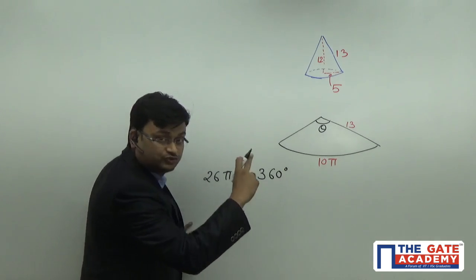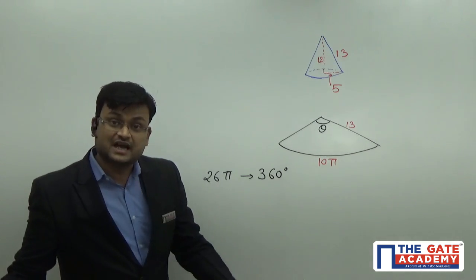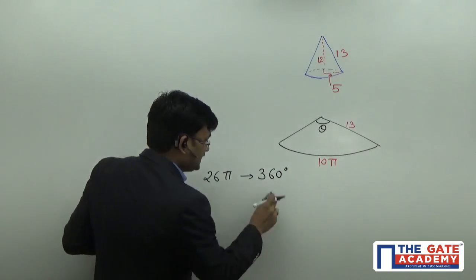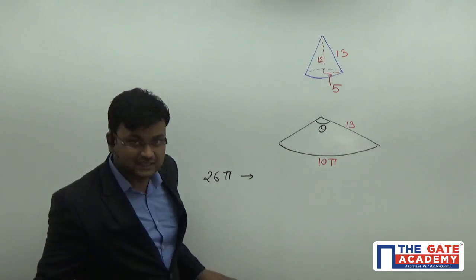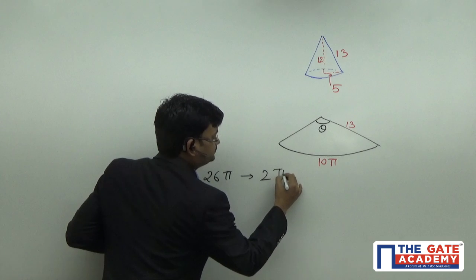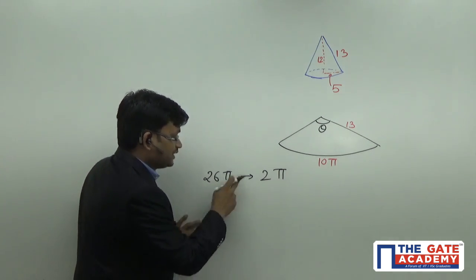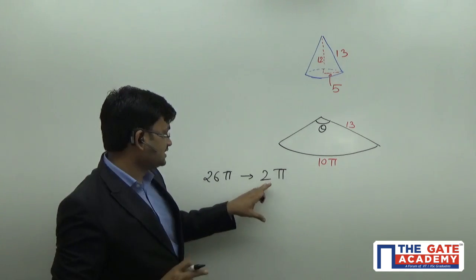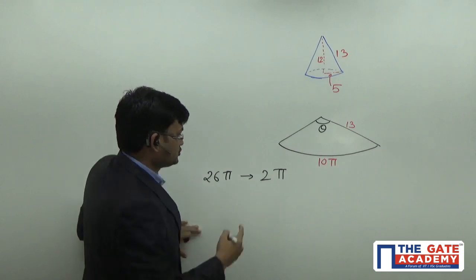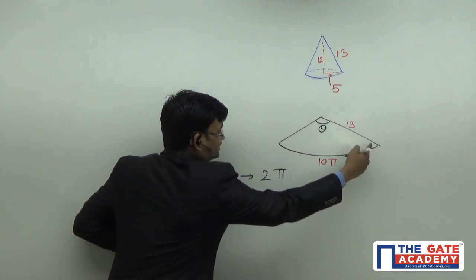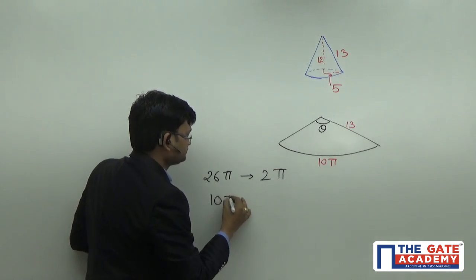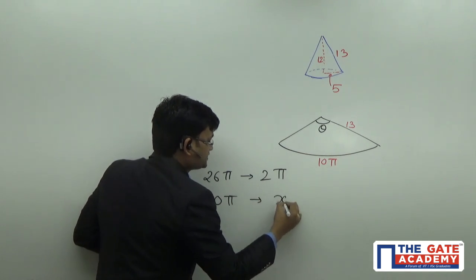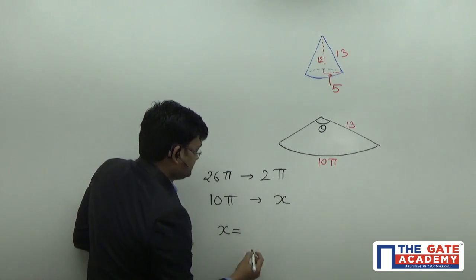26π corresponds to full 360 degree. Now, since I want the answer in terms of pi, I will not write in terms of degree. What I will write? 2π. So, for 26π circumference, my angle is 2π. Now, what will be my angle for this circumference? Let's assume it to be x. x will be nothing but...